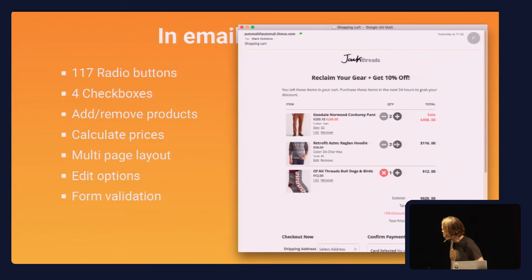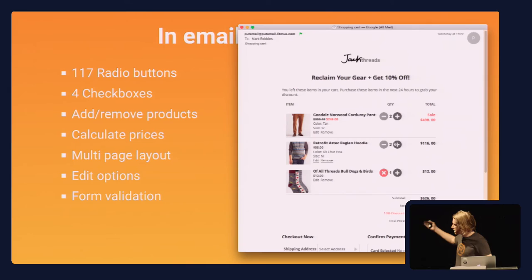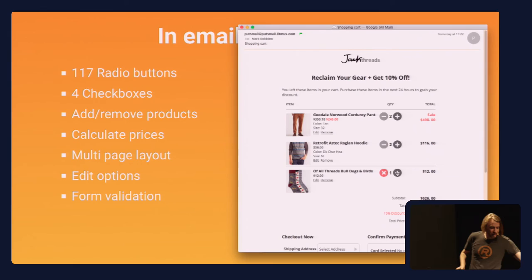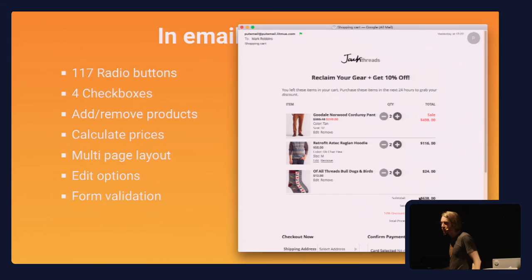That works with CSS counters. CSS counters are usually used for ordered lists or page title headings. What I've done here is use the counter values for prices. For example, this pair of socks at the bottom is $12. So if item 3, quantity 1 is checked, the counter increment is 12. If quantity 2 is checked, the counter increment is 24. Then as quantity goes up, the counter increments for the subtotal, the tax, the discount, and the total price all increase as you change the quantity.